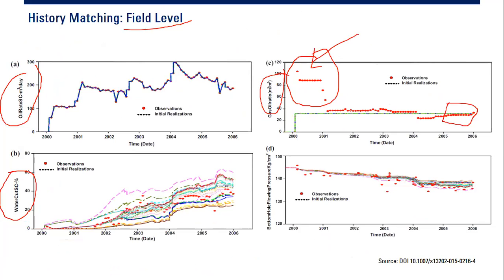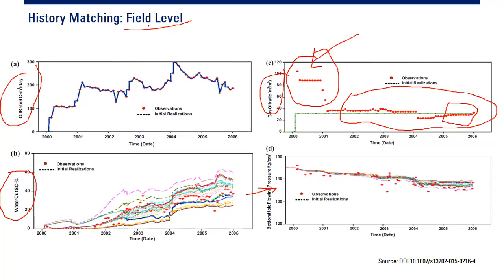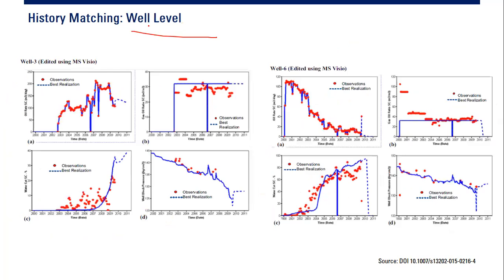You can accept this — based on the data it is more or less acceptable, already good matching. This is the bottom hole flowing pressure for the entire reservoir section. But we need to do history matching for each well as well — at the well level. We check the oil rate, water cut, gas-oil ratio, and pressure for each well.